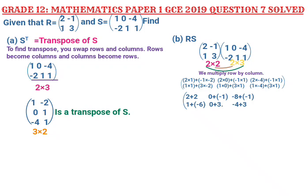Second row results: 1 times 1 gives 1, plus 3 times negative 2 gives negative 6, sum is negative 5. Then 1 times 0 gives 0, plus 3 times 1 gives 3, sum is 3. Then 1 times negative 4 gives negative 4, plus 3 times 1 gives 3, sum is negative 1.